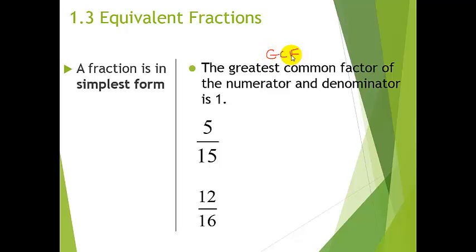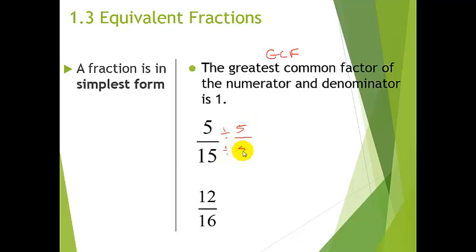A fraction is in simplest form if the greatest common factor (GCF) of the numerator and denominator is 1 — meaning all common factors have been divided out. For example, both numbers end in 5, so I know I can divide by 5. Using the copycat of 5 over 5 — which really equals 1 — I'm just changing the look, not the value. So 5 divided by 5 is 1, and 15 divided by 5 is 3.